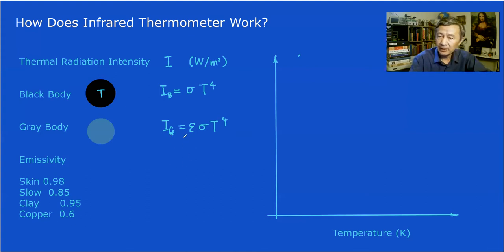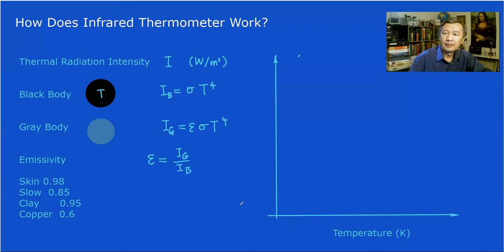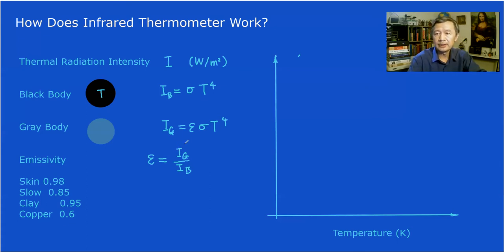The parameter epsilon is defined as emissivity. Emissivity equals the intensity of the gray body divided by the intensity of the black body. In this way, you can see that the intensity of the gray body is always weaker than the black body intensity.